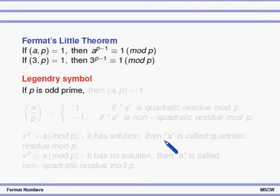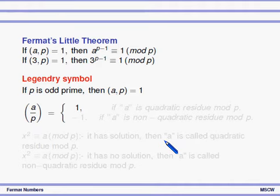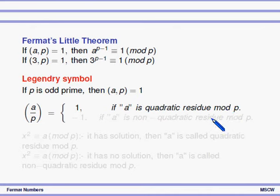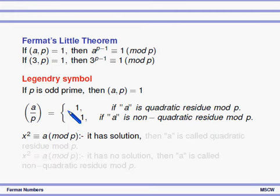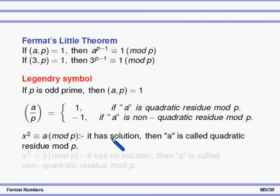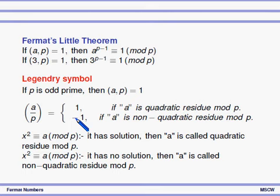What is the Legendre symbol? If p is an odd prime and a and p are relatively prime, then the Legendre symbol (a/p) equals 1 if a is a quadratic residue modulo p, and equals −1 if a is a non-quadratic residue modulo p. That is, x² ≡ a (mod p) has a solution when (a/p) = 1, and no solution when (a/p) = −1.